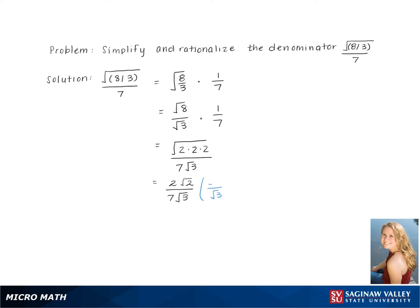We now rationalize the denominator, multiplying the top and bottom of the fraction by square root 3. This gives us 2 times the square root of 2 times 3 over 7 times the square root of 3 times 3.